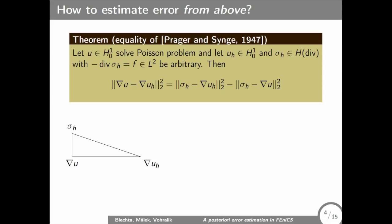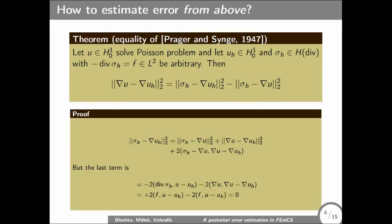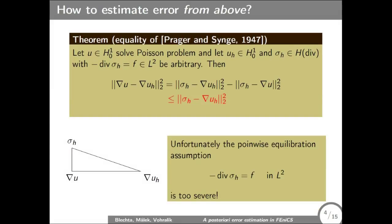Assume that we have some conforming approximations and the flux which equilibrates with the right-hand side. Then Prager-Synge equality holds. It's actually orthogonality, it's Pythagorean theorem, which is equivalent to this scalar product being zero. It's zero because you integrate by parts. We get here divergence of sigma_h, which is by assumption F. And the second term, it's from the equation, it's also F here. So it holds. It's quite nice that we could drop this term. We have really estimated in terms of known variables.